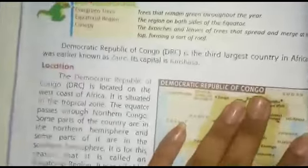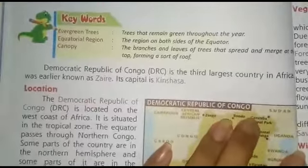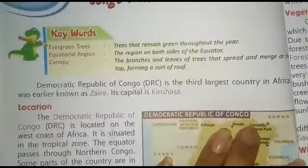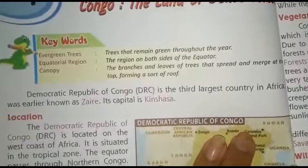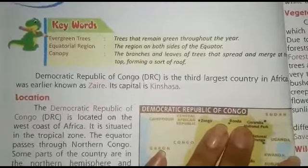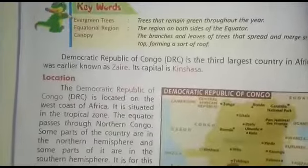The Democratic Republic of Congo, DRC, is the third largest country in Africa. It was formerly known as Zaire. Its capital is Kinshasa.